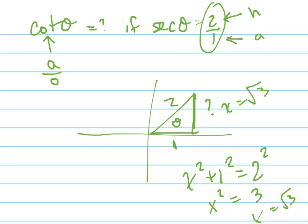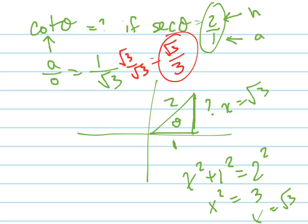So now I can find it. The adjacent is 1 and the opposite is root 3. For the cotangent — which is adjacent over opposite — you have to multiply by root 3 on the top and root 3 on the bottom, and then it's root 3 over 3. This is called rationalizing the denominator, and there's your answer.